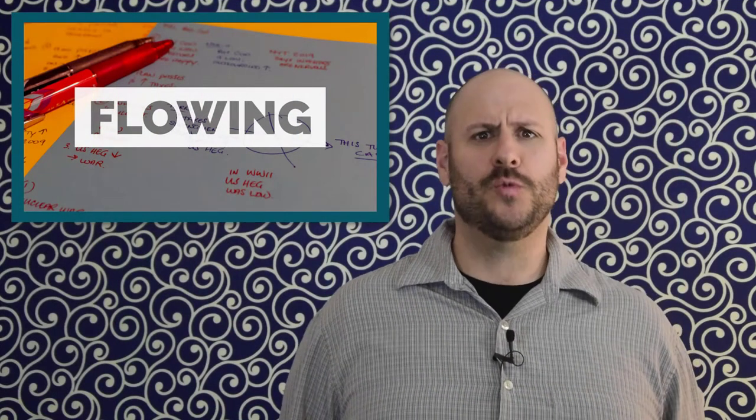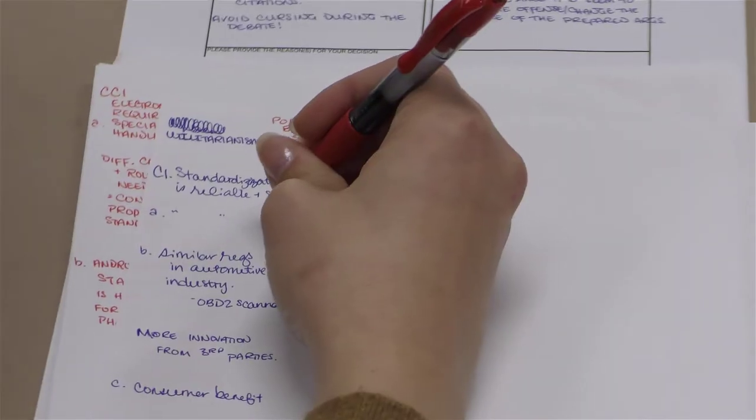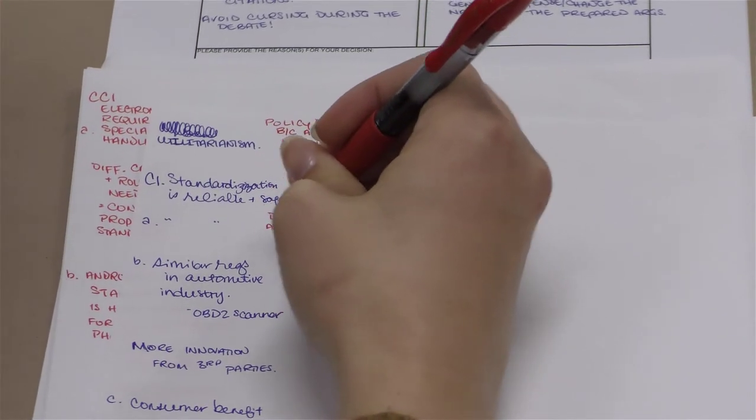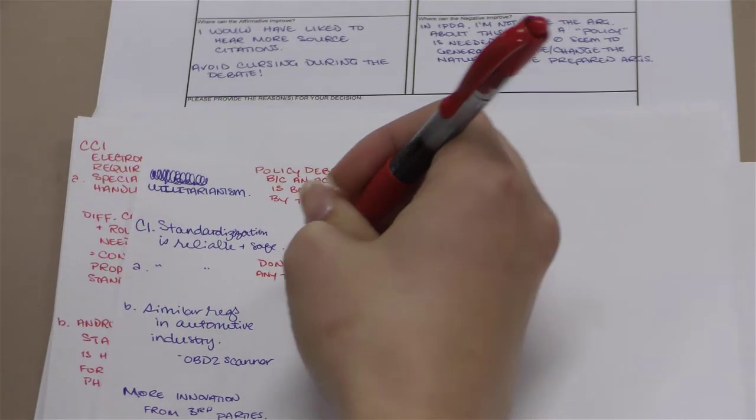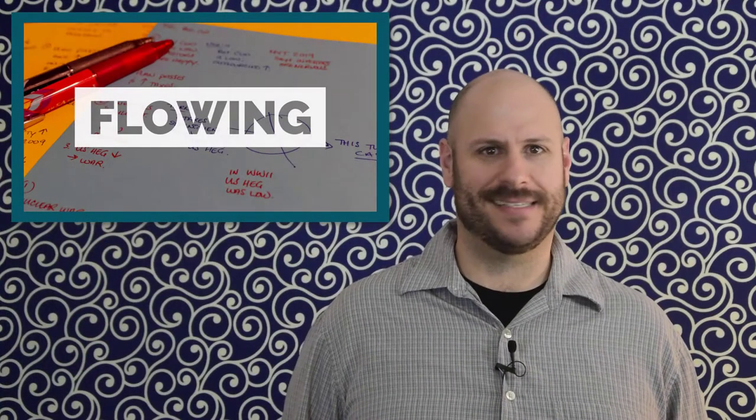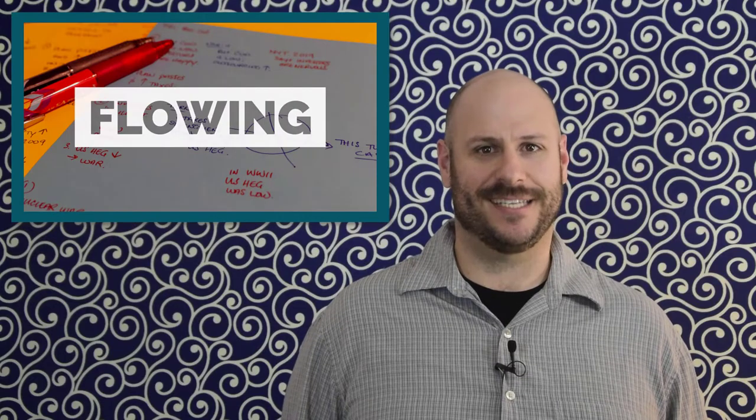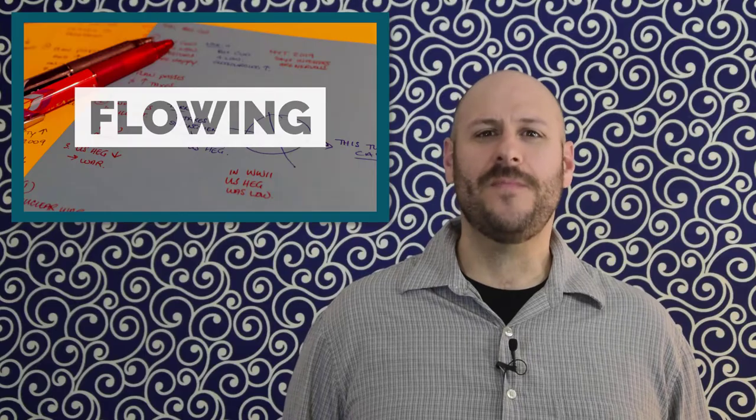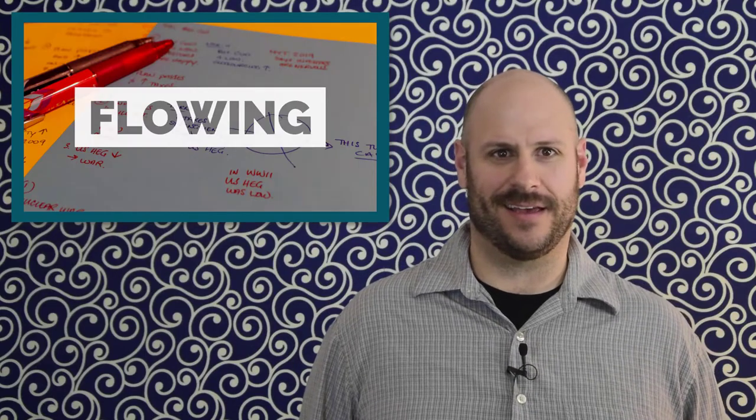In fact, in value-based debates, you will see a similar setup, but the affirmative will follow their framework arguments with a series of contentions, and the negative will typically respond with counter-contentions and procedural argumentation. Just like with policy topics, the top-of-case gets its own sheet of paper, and each contention and counter-contention gets its own sheet of paper.